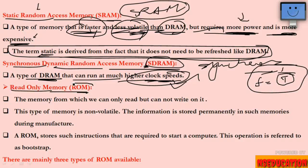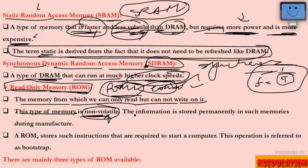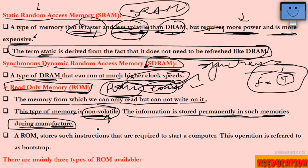Next is ROM — Read Only Memory. This is the second type of memory. You can only read from ROM, you cannot write to it. ROM is non-volatile, meaning the information stored in it is permanently stored. Information is stored during manufacture. For example, in a laptop, the operating system is already stored and you cannot erase it. ROM stores instructions required to start a computer — this process is called booting.